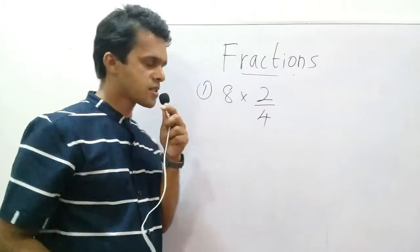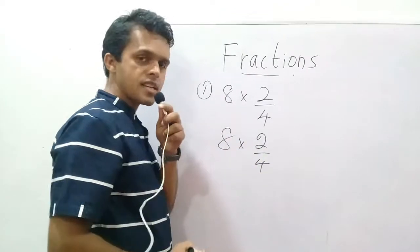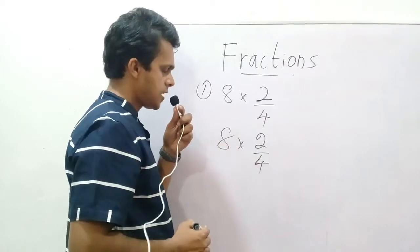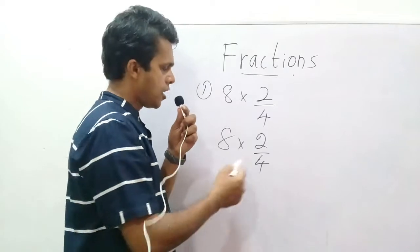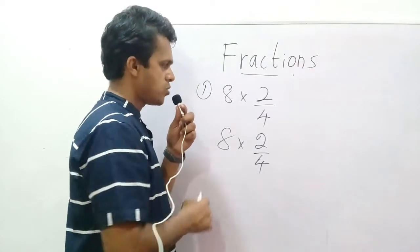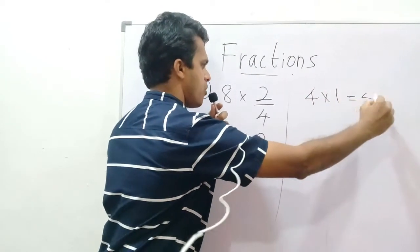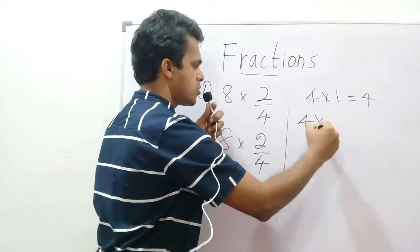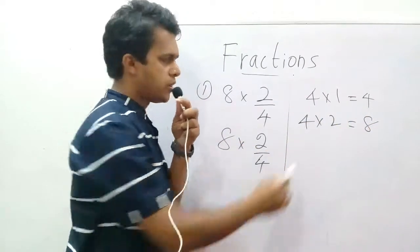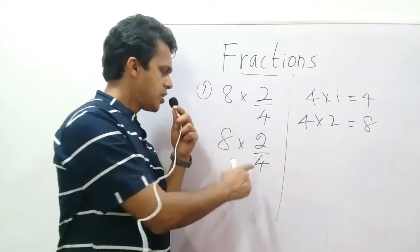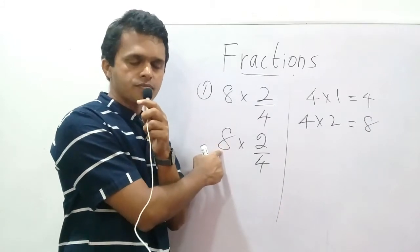Multiplication of fractions: 8 into 2 over 4. We can simplify this whole number and this fraction — we can multiply. This means 4 times 1 is 4, and 4 times 2 is 8. This means 4 is a multiple of 4, and 8 is a multiple of 4.